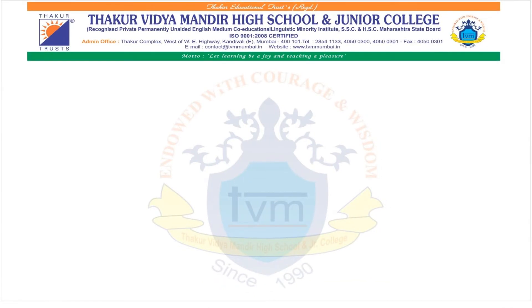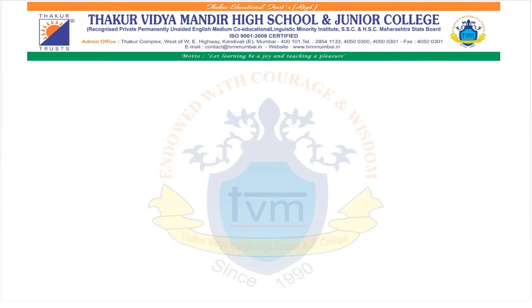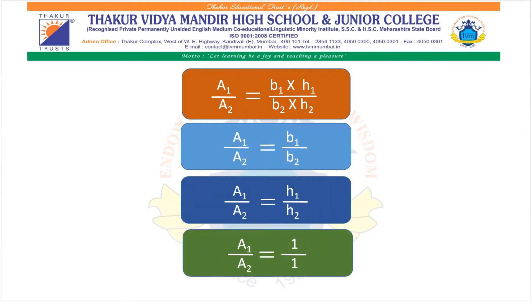Let us revise what we have done. We did four properties related to the ratio of areas of two triangles, which you can see on the screen.